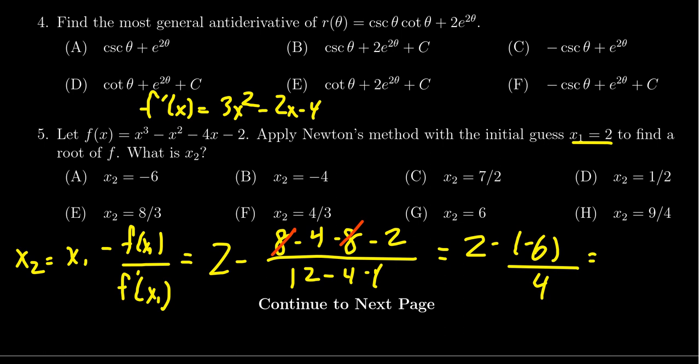You have a double negative, so this is going to be 2 plus 6 over 4. But 6 and 4, we could reduce the fraction as 3 halves. To add those together, we think of 2 as 4 halves plus 3 halves. The approximation is going to be 7 halves, which gives us that x₂ is C.